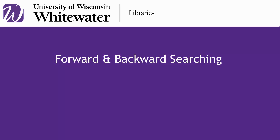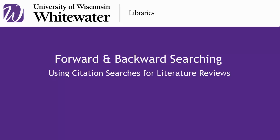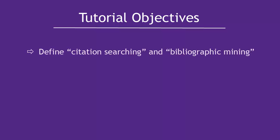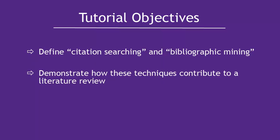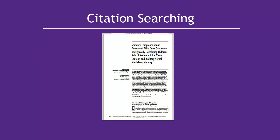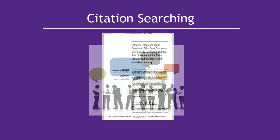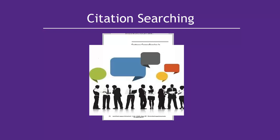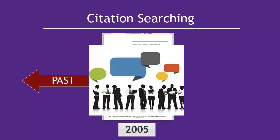In this tutorial, we'll define citation searching and bibliographic mining, and show how these techniques contribute to a literature review. Think about a research article you find as part of an ongoing conversation among researchers. That research article represents one researcher's ideas and findings at a given point in time. Citation searching allows you to use that article to trace the history of an idea both backwards and forwards in time.